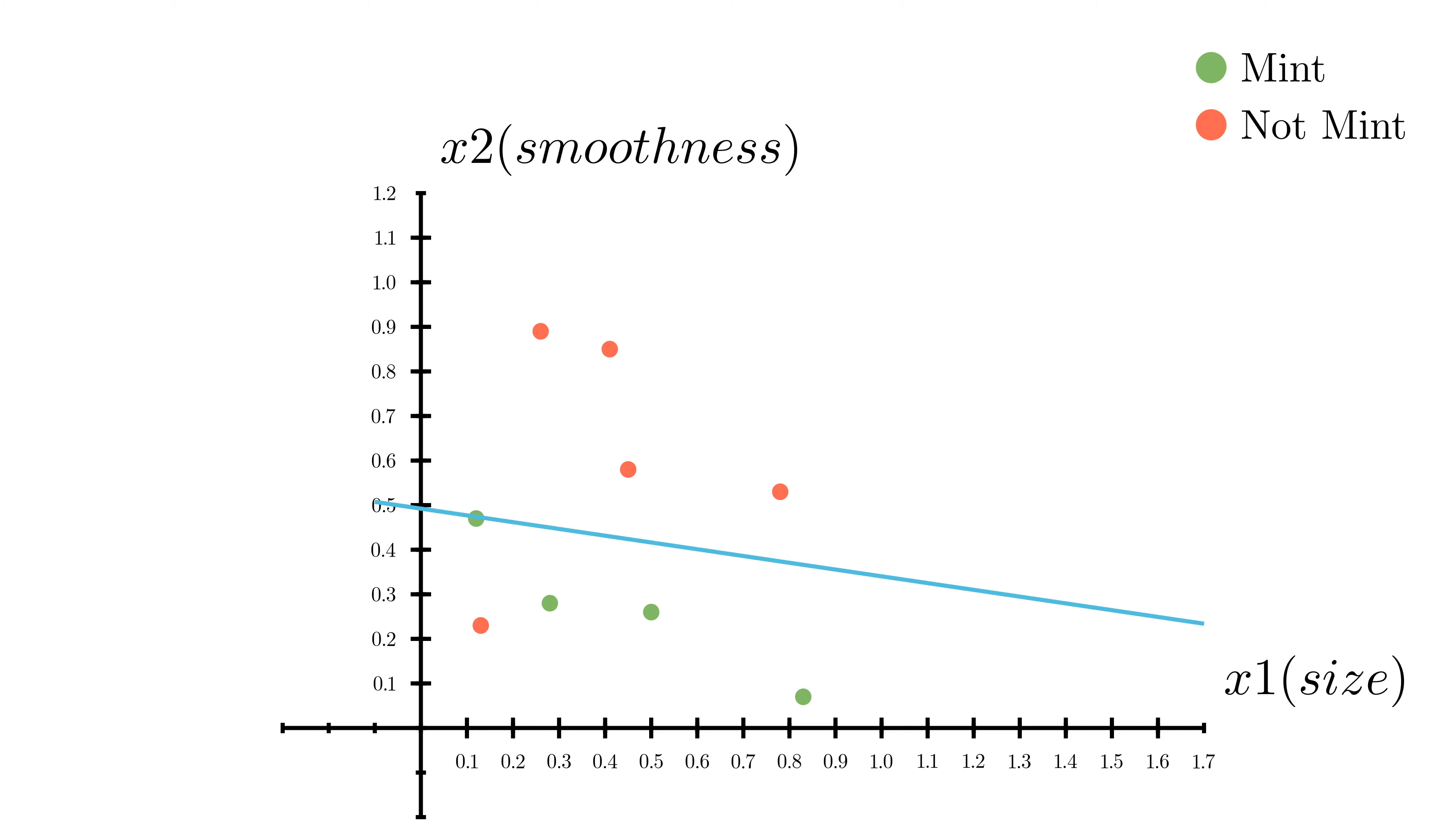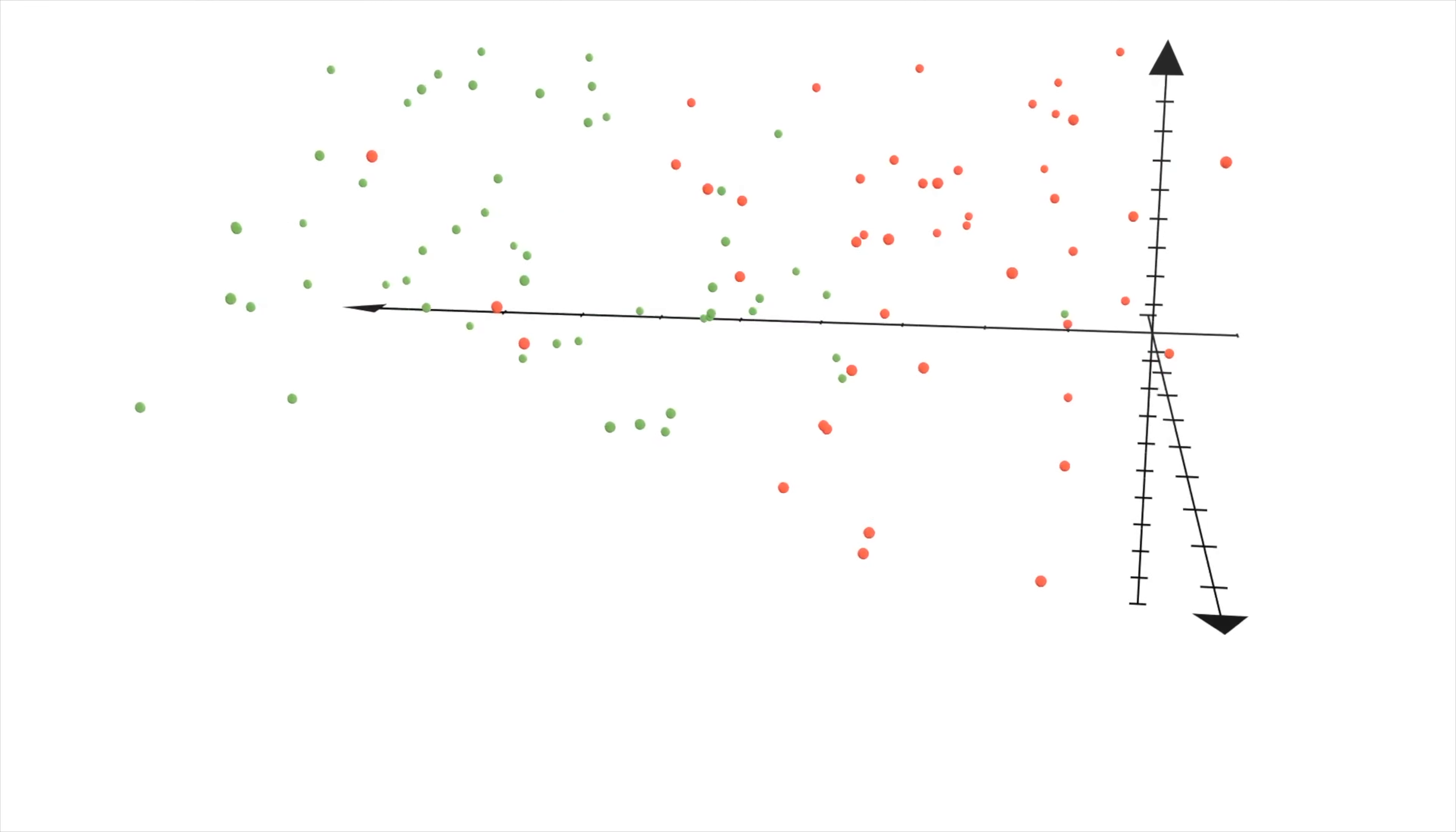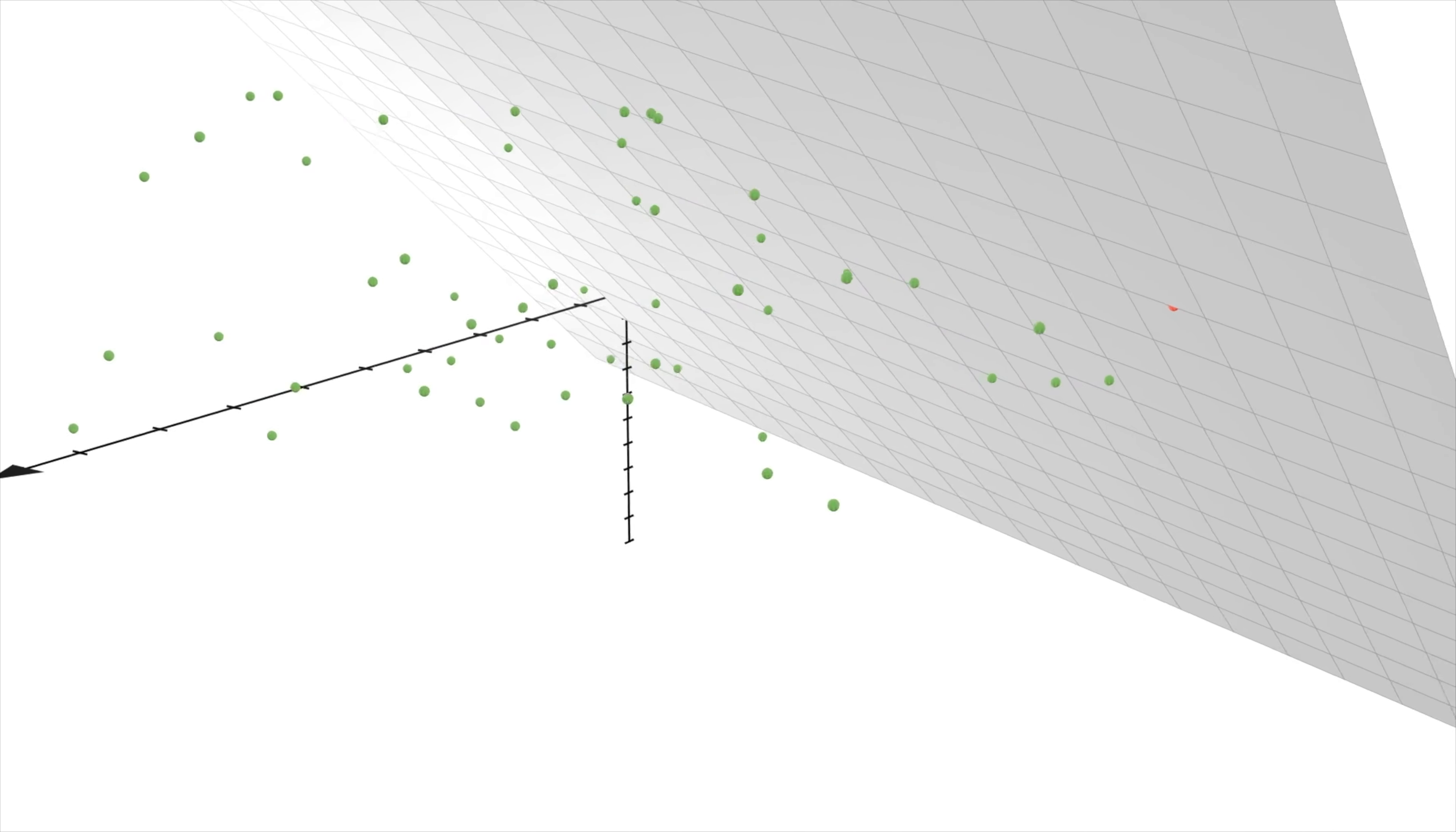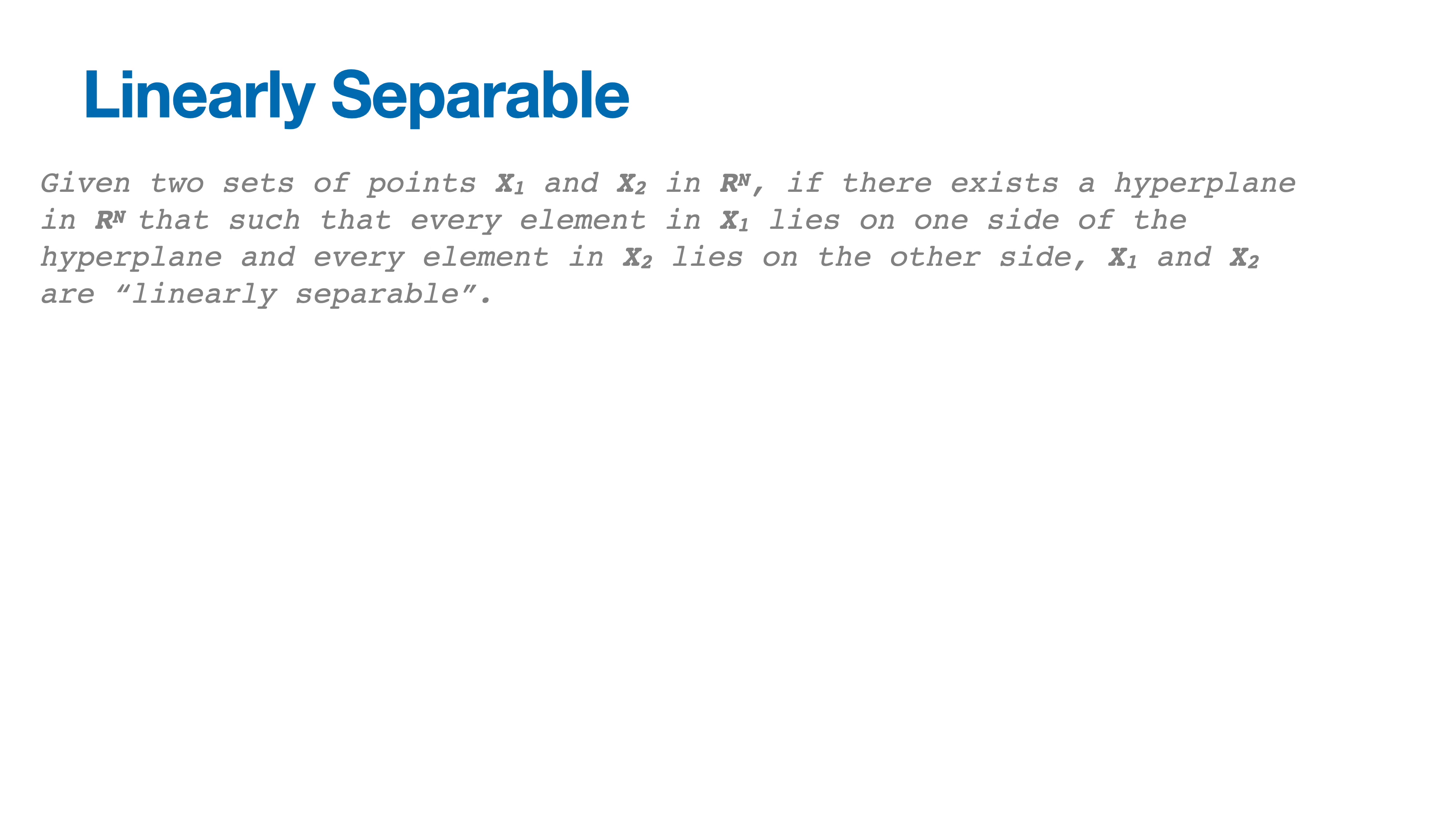This concept of data being linearly separable extends into 3 and higher dimensions as well. In 3 dimensions, if you have data like this, if you can separate green points from red points with a plane, then the data is said to be linearly separable. In the general case, if you have two sets of points, x1 and x2 in R^n, if there exists a hyperplane in R^n such that every element in x1 lies on one side of the hyperplane, and every element in x2 lies on the other side, then the data is linearly separable. More formally, if there exists a vector of weights w and an offset b such that w dot x plus b is less than 0 for every x in x1, and w dot x plus b is greater than 0 for every x in x2, then the data is linearly separable.